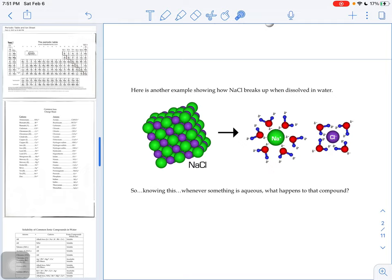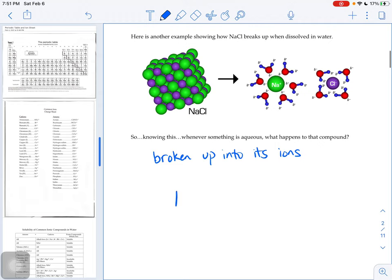So whenever something's aqueous, what does that mean if it's being dissolved in water? It means that it's broken up into its ions. In other words, it's not NaCl together if it's aqueous. It's Na+ and Cl- apart.